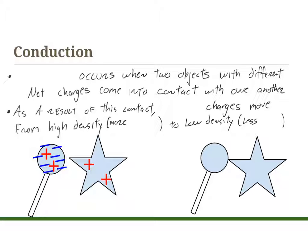Conduction occurs when two objects with different net charges come into contact with one another. So we could have an object that has a negative 12 charge and an object with a positive 2 charge. They will conduct charge to each other when they touch. As a result of this contact, negative charges move from an area of high density, which would be more negative, to an area of low density, which would be less negative.